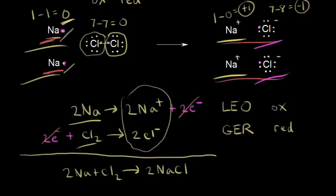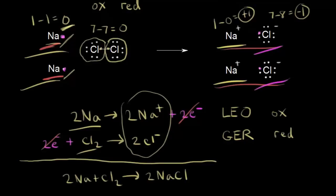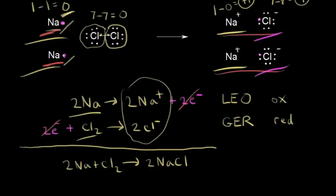Finally, we can identify our oxidizing and reducing agents. Thinking carefully about the electrons and the definitions is key to avoiding confusion. Sodium is undergoing oxidation, and by doing so it supplies the two electrons for the reduction of chlorine. Therefore, sodium is the agent for the reduction of chlorine — the reducing agent. Chlorine, by undergoing reduction, takes the electrons from the two sodium atoms, allowing sodium to be oxidized. So chlorine is the oxidizing agent.